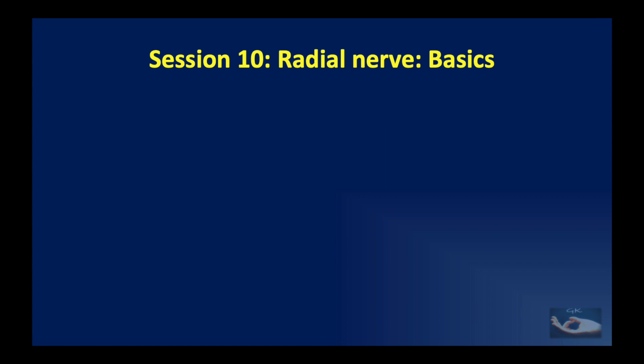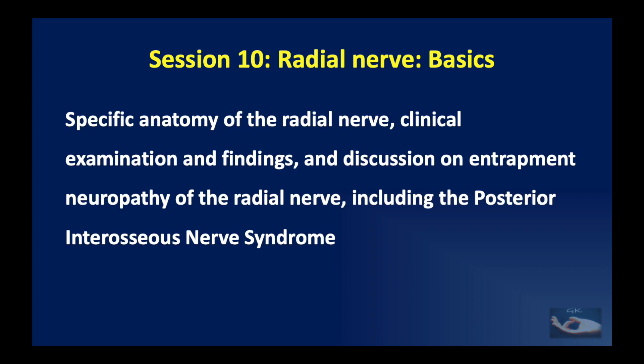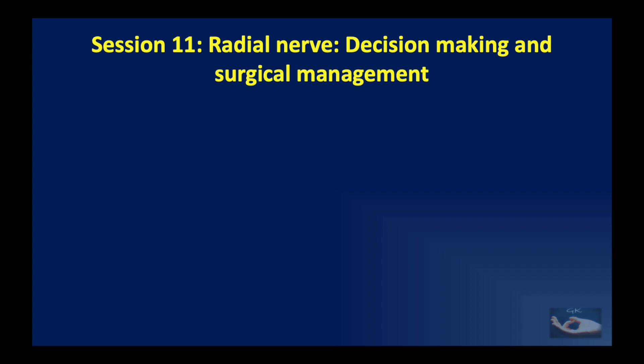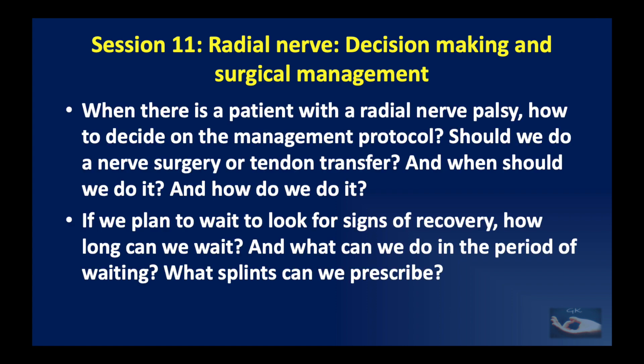Session 10 will be on the radial nerve — the anatomy, clinical examination and findings in radial nerve injury, and discussion on entrapment neuropathy including the posterior interosseous nerve syndrome. This is followed by a session on decision making and surgical management of radial nerve injuries: when to decide on the management protocol, whether to do nerve surgery or a nerve transfer, how long to wait for signs of recovery, what to do during the waiting period, and what splints to prescribe.